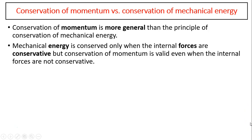Conservation of momentum versus conservation of mechanical energy: conservation of momentum is more general than the principle of conservation of mechanical energy because in most cases, momentum is conserved in any collision. But mechanical energy is only conserved when the internal forces are conservative — that means when internal forces are gravity or a spring. So when two cars with a spring attached are colliding, both momentum and mechanical energy are conserved. But in most cases, momentum is conserved while total mechanical energy is not.